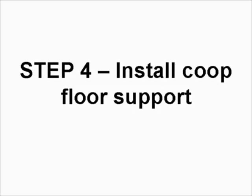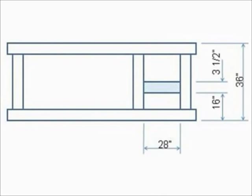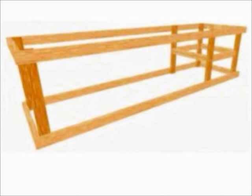Step four, install the coop floor support. Using two by four, cut two lengths at 28 inches and two lengths at 34 inches. Install the coop floor supports as shown and nail them to the vertical legs using two nails per connection.